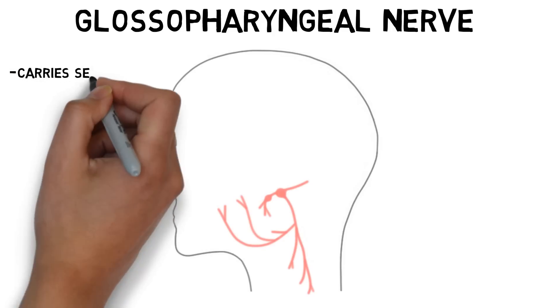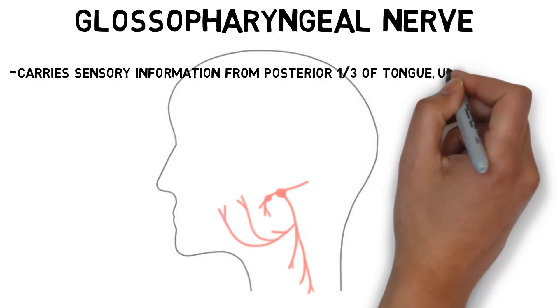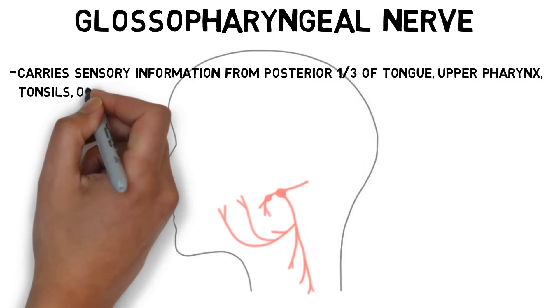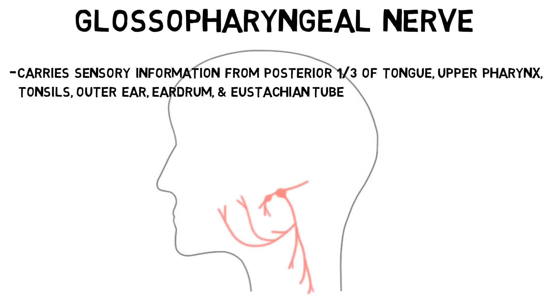It carries sensory information about touch, pain, and temperature from the posterior third of the tongue, the upper part of the throat, the tonsils, part of the outer ear, the inner surface of the eardrum, and the eustachian tube.